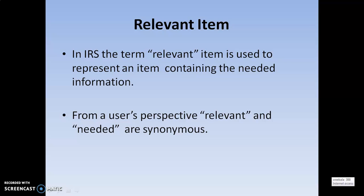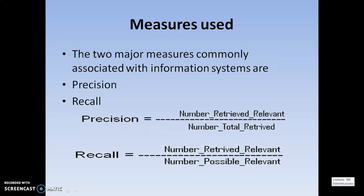From a user's perspective, relevant and needed are synonymous — the relevant item the user is going to search and the needed information are similar terminology. Now, what kind of measurements will we use along with these relevant items? For relevant items, we are going to use two major measurements. These two measurements are most important for our information retrieval systems — the first is precision and the other is recall.